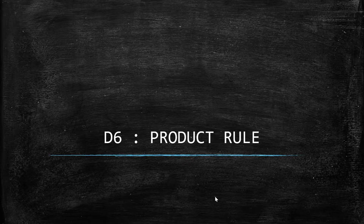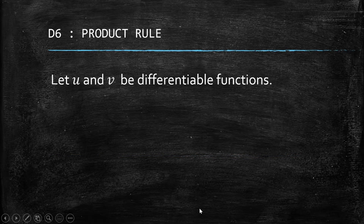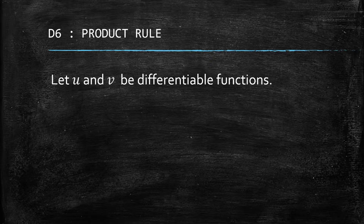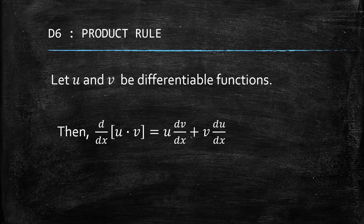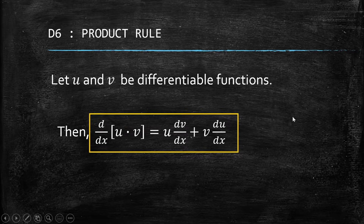Welcome back. We are now on the sixth differentiation rule: the product rule. Let u and v be differentiable functions. We use variables to represent functions because this makes it easier to remember the formula. If we have a product of two functions, u times v, the derivative is u·dv plus v·du.